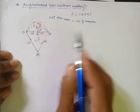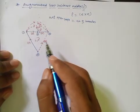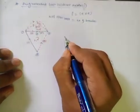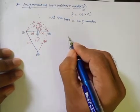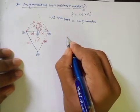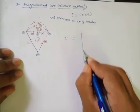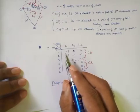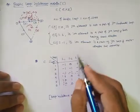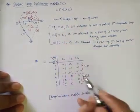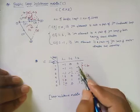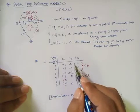The direction of each fictitious loop is decided by the direction of the branch itself, so it will be positive. I will draw the matrix C, which we formed in the previous lecture — that is, the basic loop incidence matrix. The dimension for this was E cross L, that is six by three loops.